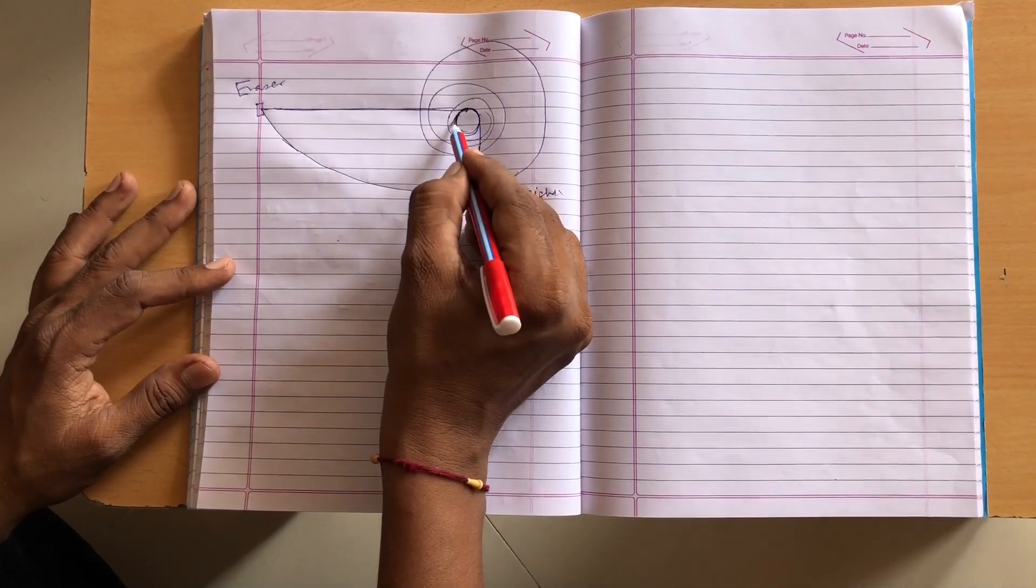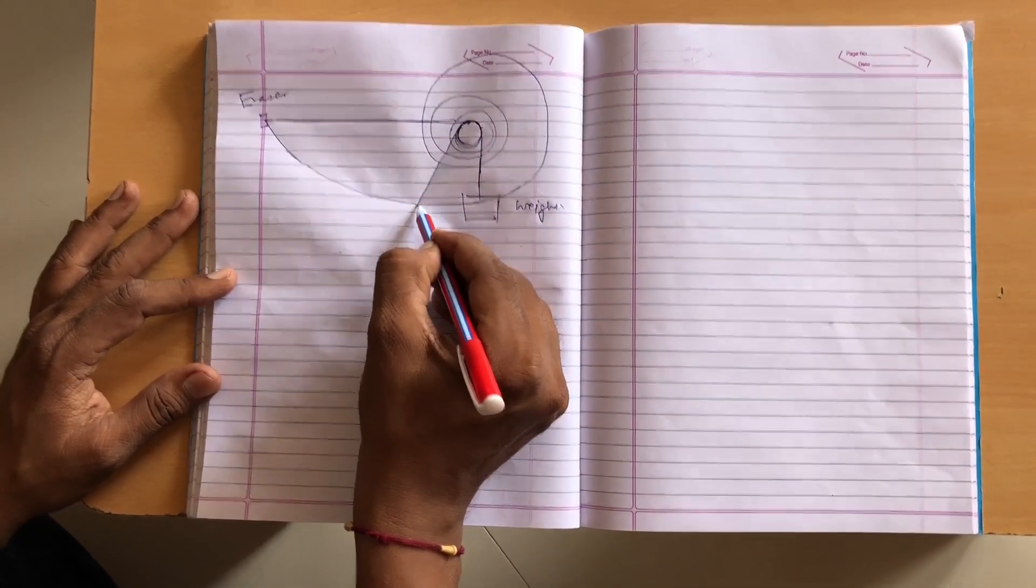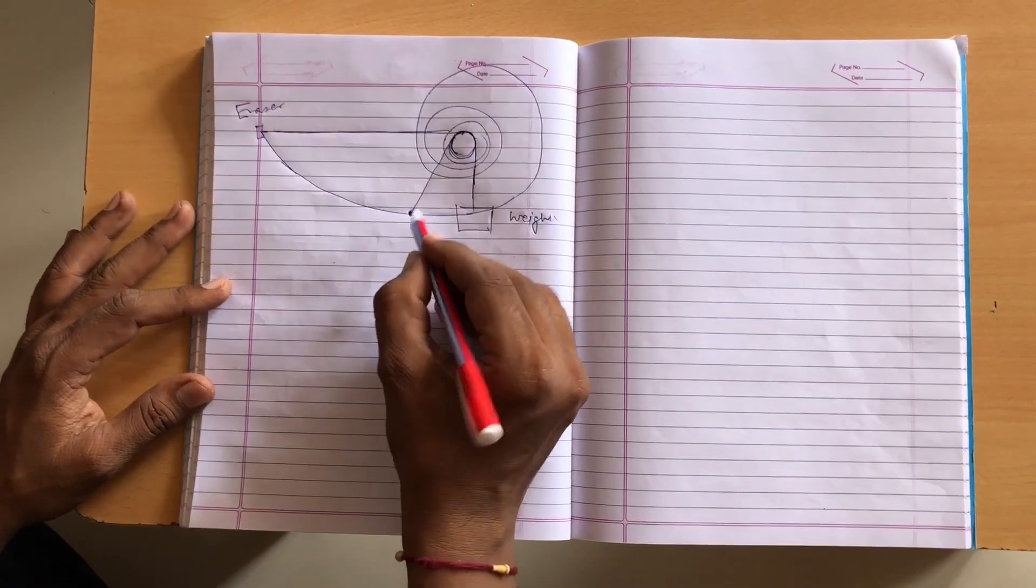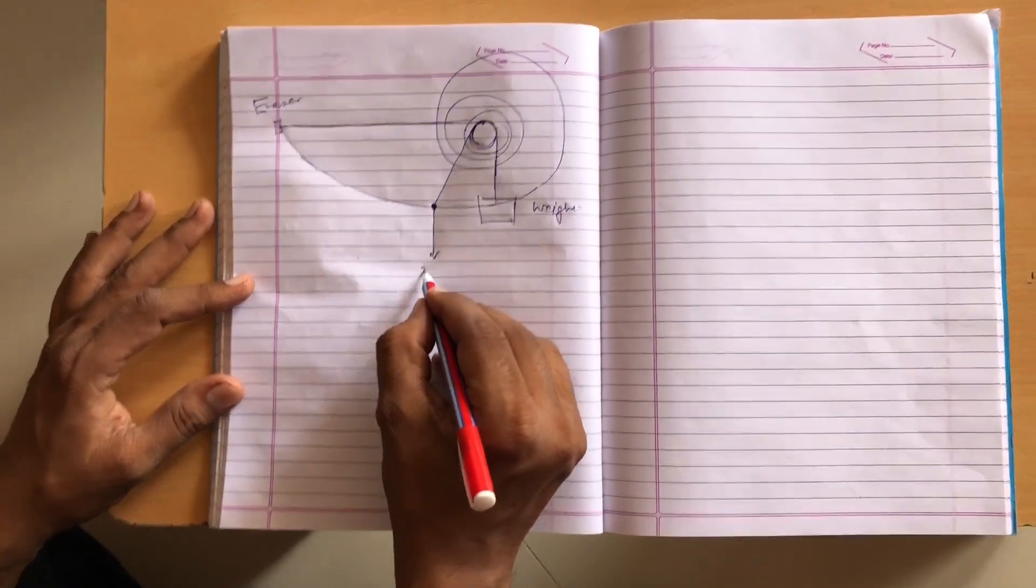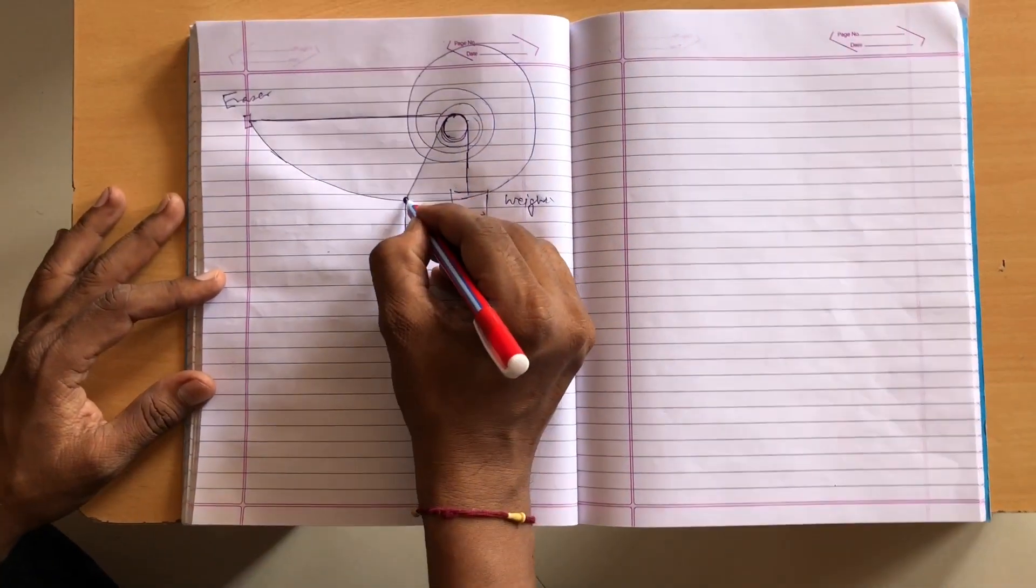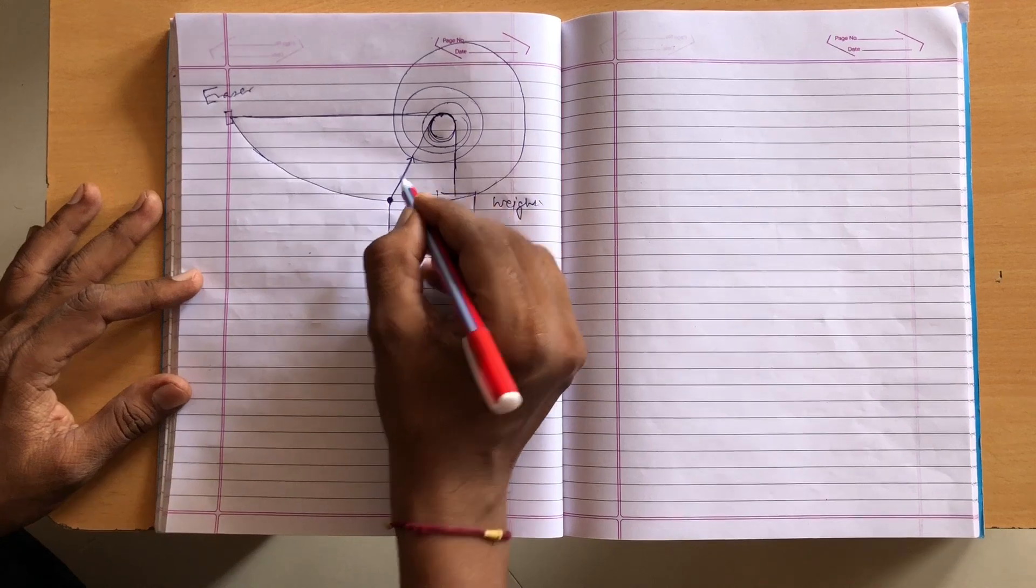At certain instant, if you draw FBD, the eraser experiences two forces: weight force downward, but the tension T.